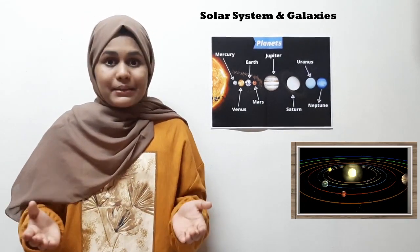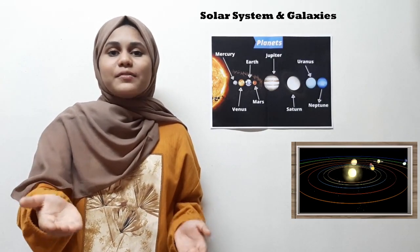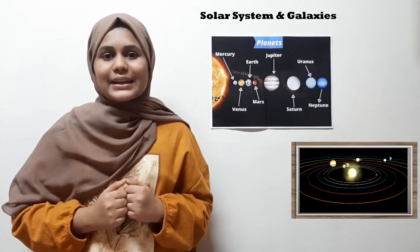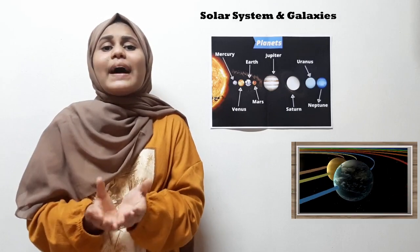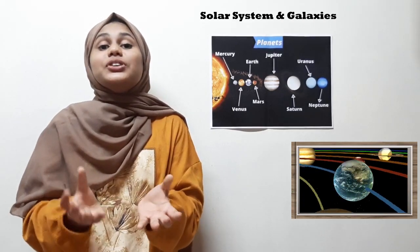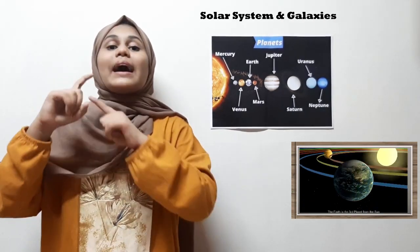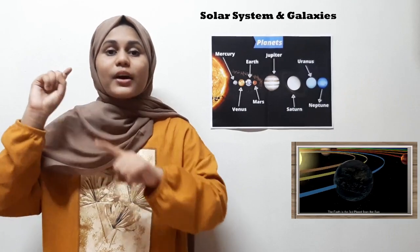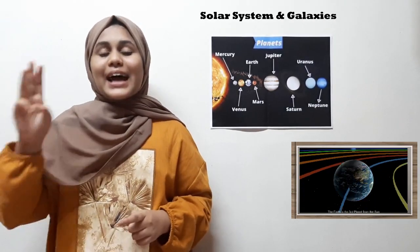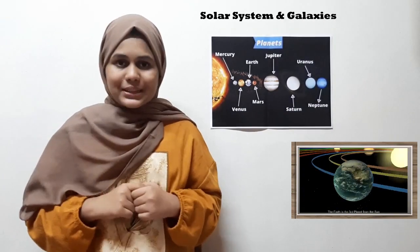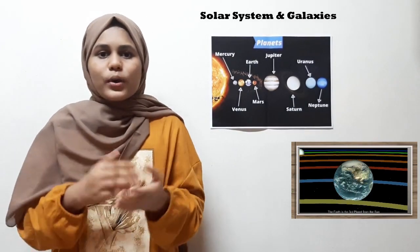Now, the objects that revolve around the Sun — let's name them. Firstly we have the planets, then dwarf planets, then we have the natural satellites, then we have asteroids, meteorites, and comets.